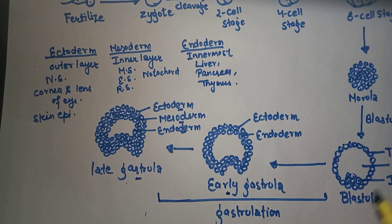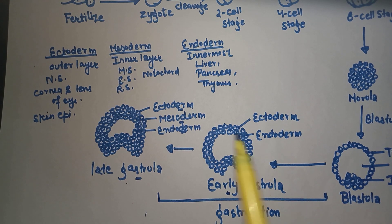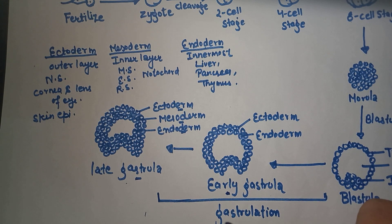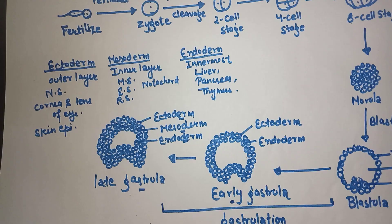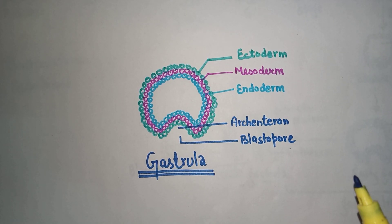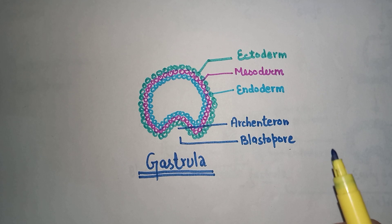Early gastrula is formed in all organisms except human beings. Late gastrula is formed in the case of human beings, as well as arthropods, mollusks, and echinoderms.